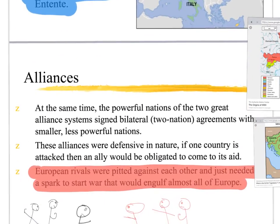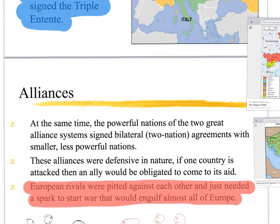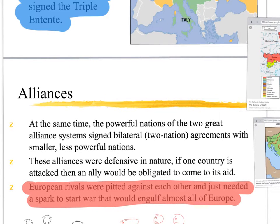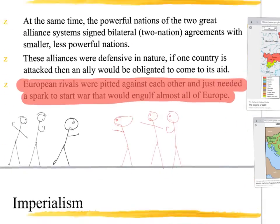Great Britain feels threatened by Germany building their navy, the Russians feel tension — there's all sorts of tension created. But if a war breaks out between these sides, all of a sudden all these countries go to war. If one country goes to war with another, now all of Europe is engulfed in a war that really might not have anything to do with them. There are also a bunch of smaller alliances formed. All it's going to take is a spark — and we're going to talk about that spark a little bit later.